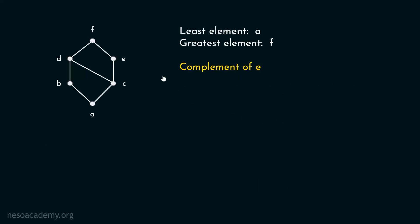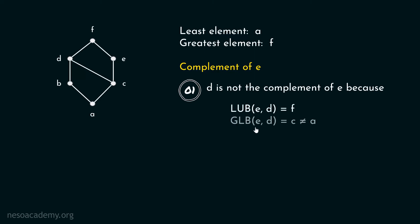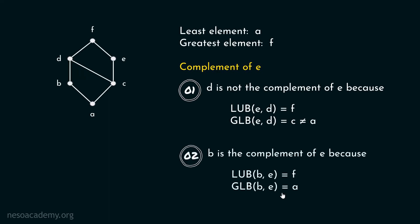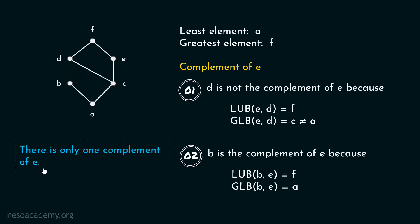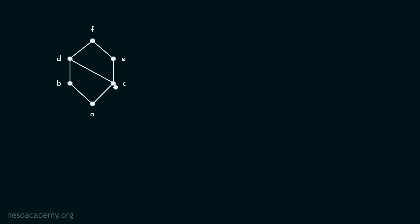Let's find the complement of E. D is not the complement of E because the least upper bound of E and D is F but the greatest lower bound of E and D is C, not A. B is the complement of E because the least upper bound of B and E is F and the greatest lower bound of B and E is A. C, A, and F are not complements of E. There is only one complement of E. Complement of C does not exist because the least upper bound of B and C is D, not F, and no other element works either.